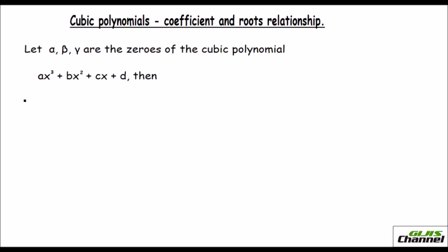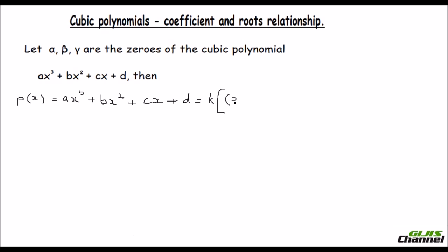Before going on to this, let me write the polynomial as p(x). So p(x) equals — this could be factorized. When we solve for this, you would first take any common term out. Since the numbers are not given, I assume there is a common term k which I have taken out. Then I factorize the cubic polynomial, and since they have given you the roots, I take x minus alpha as the first factor, x minus beta as the second factor, and x minus gamma as the third factor.